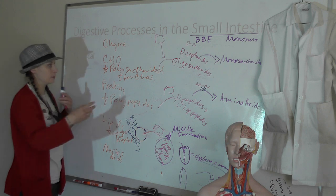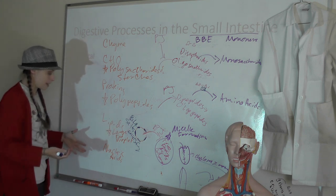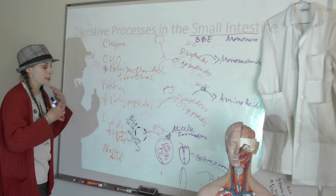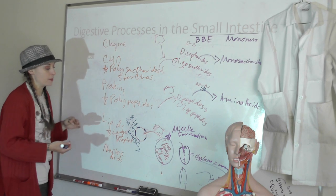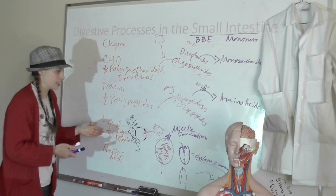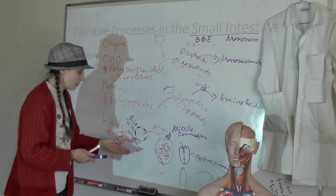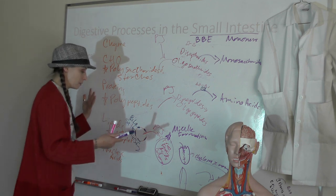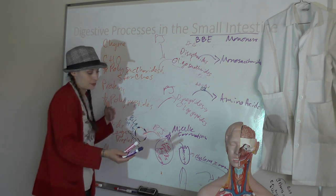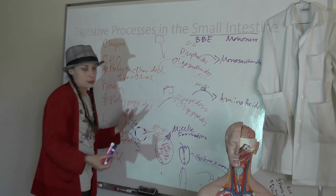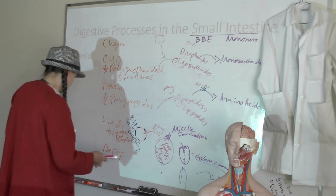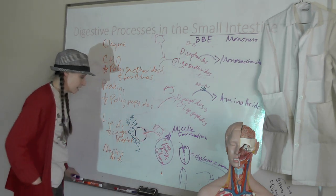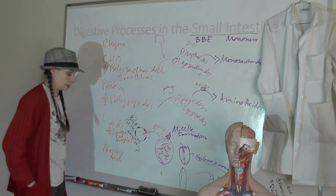For nucleic acids — RNA and DNA — no digestion occurs until we get to the small intestine. Pancreatic juice does the first step, and brush border enzymes finish it up, breaking nucleic acids down to sugars, pentose, and bases. That is the end of chemical digestion in the small intestine.